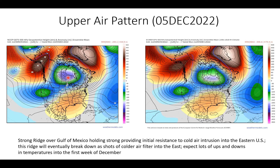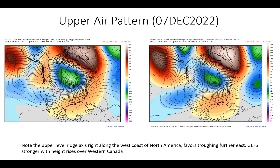Both models are in fairly good agreement with the placement of the upper-level ridge and this cold lobe. The GEFS on today's 12Z run has a stronger lobe of colder air and anomalously lower heights compared to the European EPS. Overall, this general pattern — going more zonal west-to-east — means we could be looking at more frequent cold frontal passages across the eastern U.S. We see the strong ridge holding, providing initial resistance to this colder air dropping into the east. This is just initial resistance — this ridge is eventually going to break down as we see multiple shots of colder air filter into the eastern U.S. We're expecting a lot of ups and downs in temperatures into the first week of December.